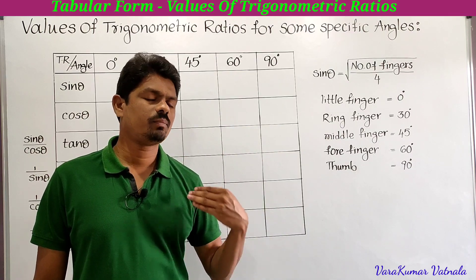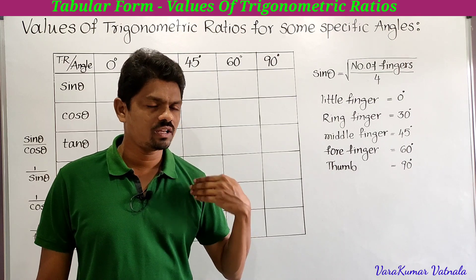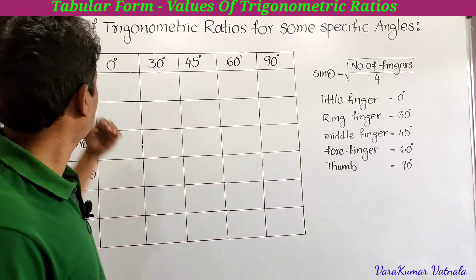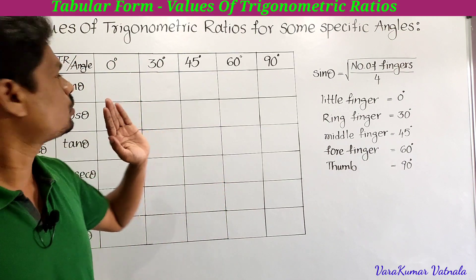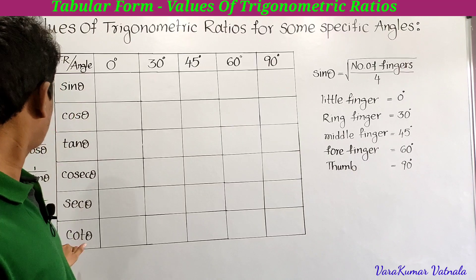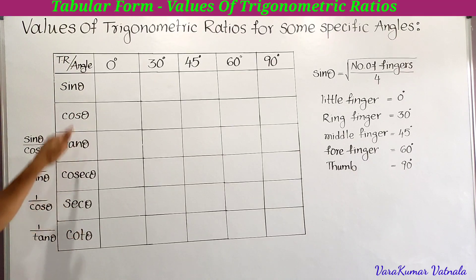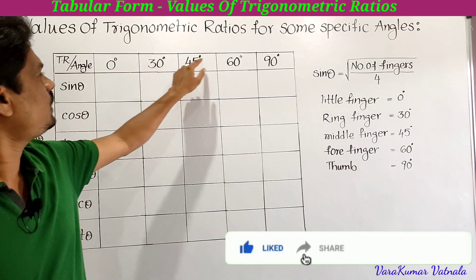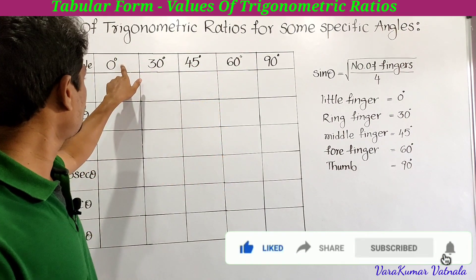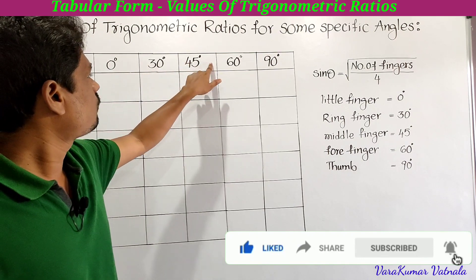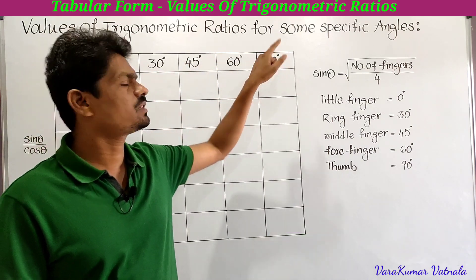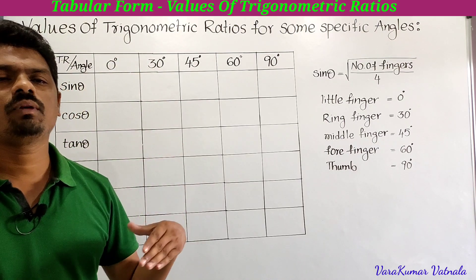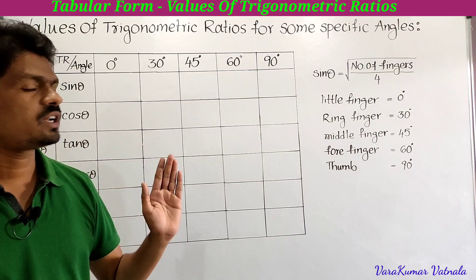This is very very important and very useful to solve problems in the remaining exercises and the next chapter — chapter 12, applications of trigonometry — and also useful for higher classes. See here how we write the tabular form: these are the trigonometric ratios and these are the angles. I will show some tricks to remember the tabular form.